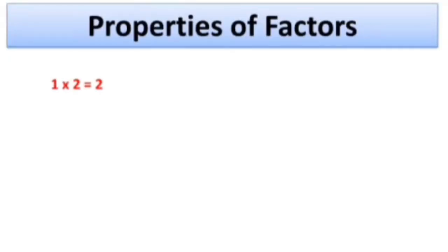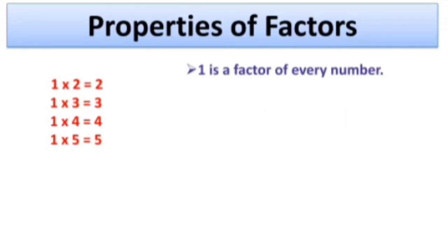1 multiplied by 2 gives 2. 1 multiplied by 3 gives 3. 1 multiplied by 4 equals 4. And 1 multiplied by 5 equals 5. That means if we multiply any number by 1 we get that number only. So from this we can say 1 is a factor of every number.